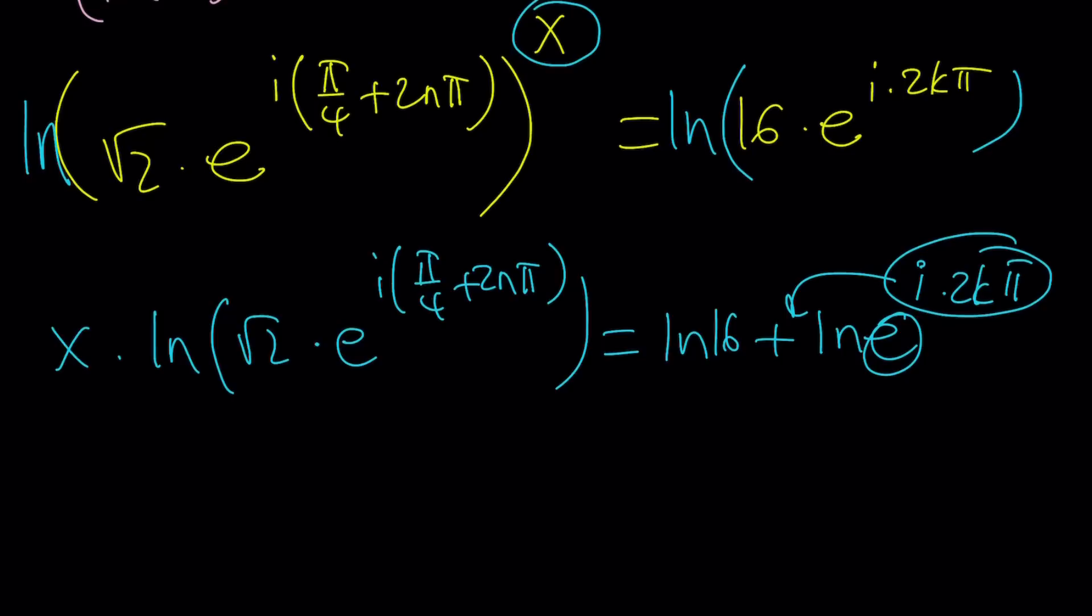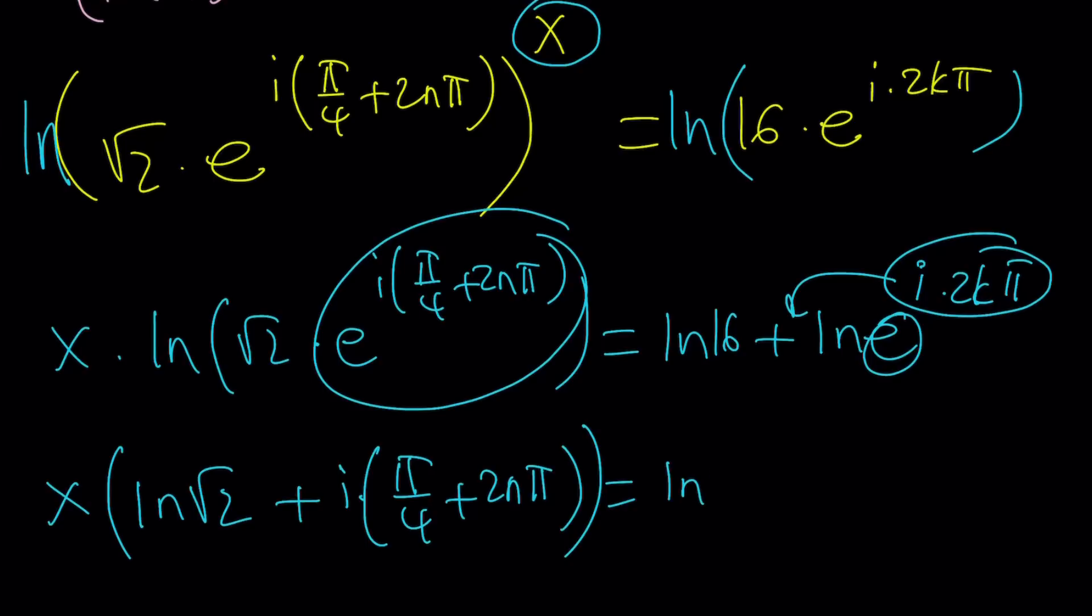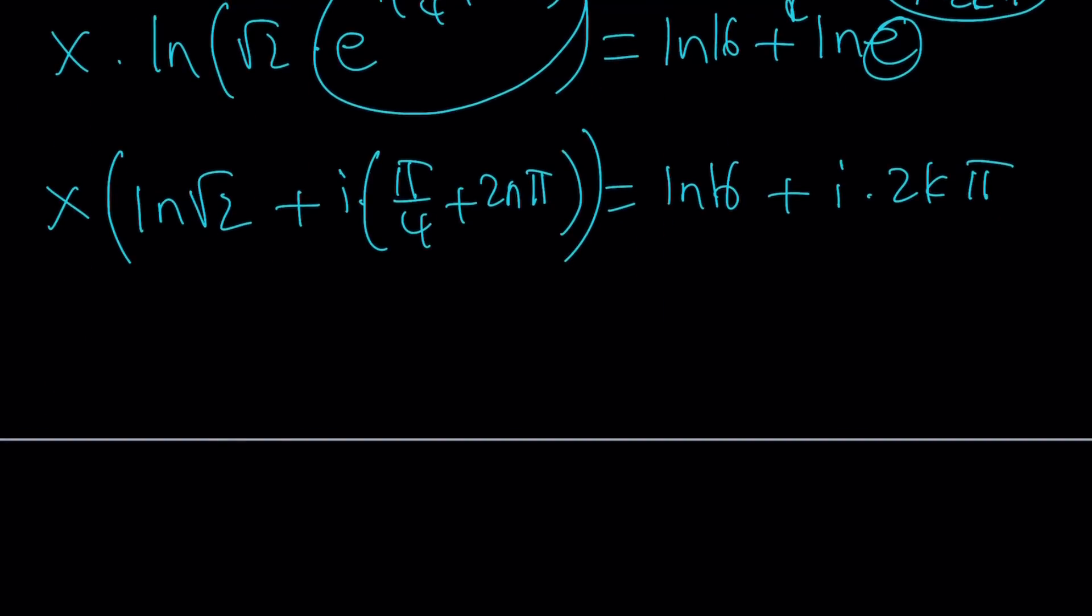Obviously ln e is 1. The same thing is going to happen here. We're going to split it up into ln√2 plus ln this. But notice that it's just i times this. So let's not write an extra step. And i times 2kπ.